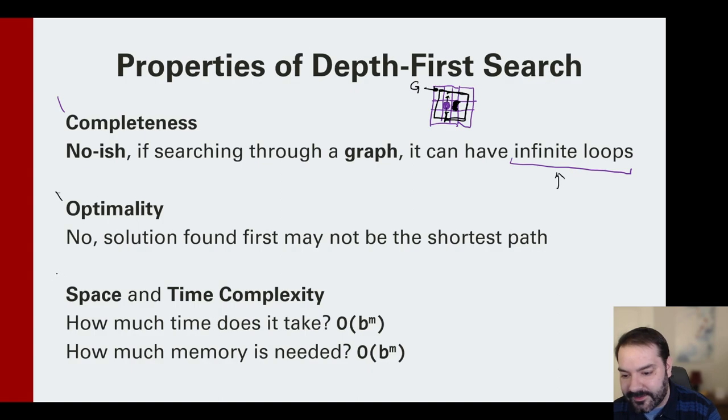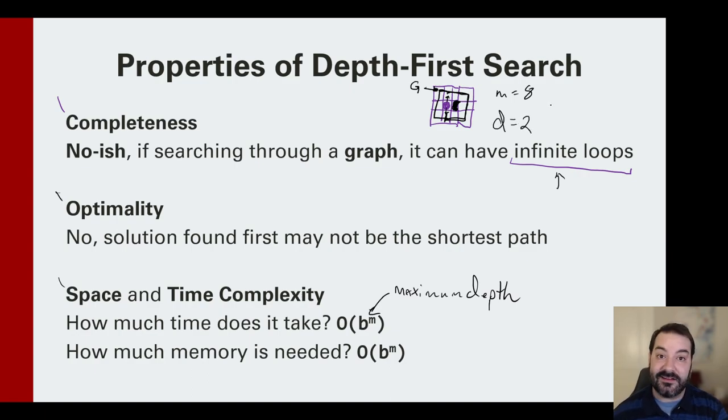When we think about its space and time complexity, we run into that ugly M. Think about that as the maximum depth. I could potentially exhaust all possible moves that I'd need to do to get here. If I went down and I'm taking the worst possible solutions, that M would take me 1, 2, 3, 4, 5, 6, 7, 8 moves, M equaling 8, rather than the optimal solution. So the optimal solution was D equals 2. We're not taking that 2. We're having to go all the way around. It's a trade-off of what we're dealing with here.